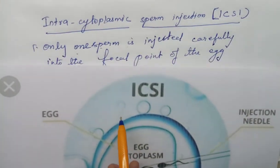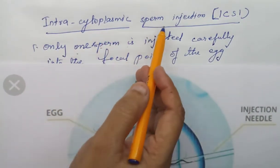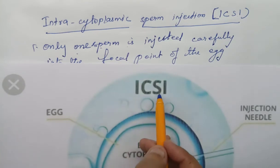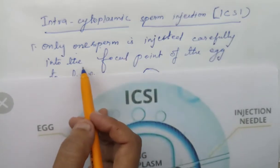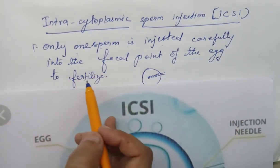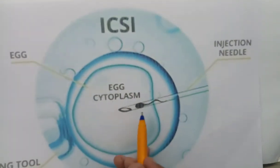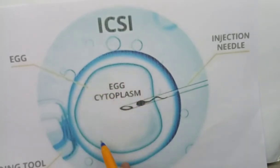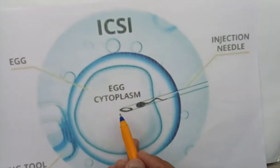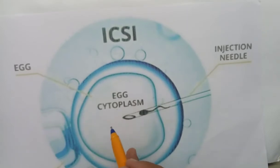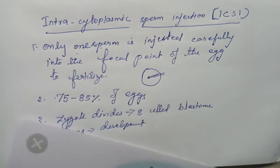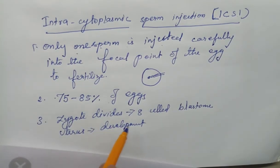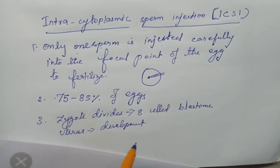Looking at the picture of Intra-Cytoplasmic Sperm Injection (ICSI), only one sperm is introduced into the egg cytoplasm. After this, fertilization occurs, followed by zygote formation. The zygote then divides and forms an 8-celled blastomere, which is introduced into the uterus where development is carried out.